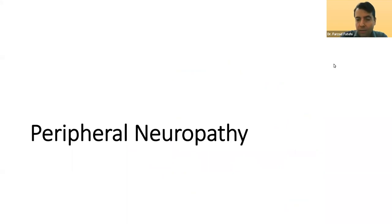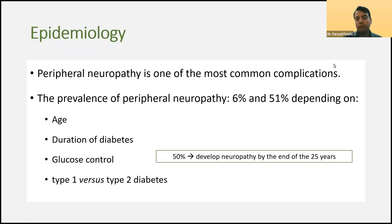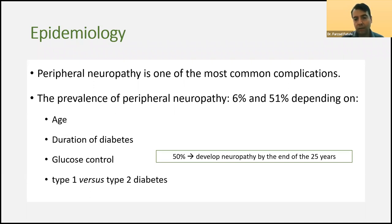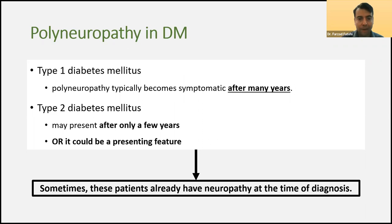One of the major complications of diabetes is peripheral neuropathy. The prevalence of peripheral neuropathy in different studies has been estimated between 6% to 50%, depending on the age, duration of diabetes, glucose control, and type 1 versus type 2 diabetes. In overall, it's estimated that around half of patients may develop diabetic neuropathy after 25 years. Therefore, we should always be alert about neuropathy as a complication and be able to manage it.